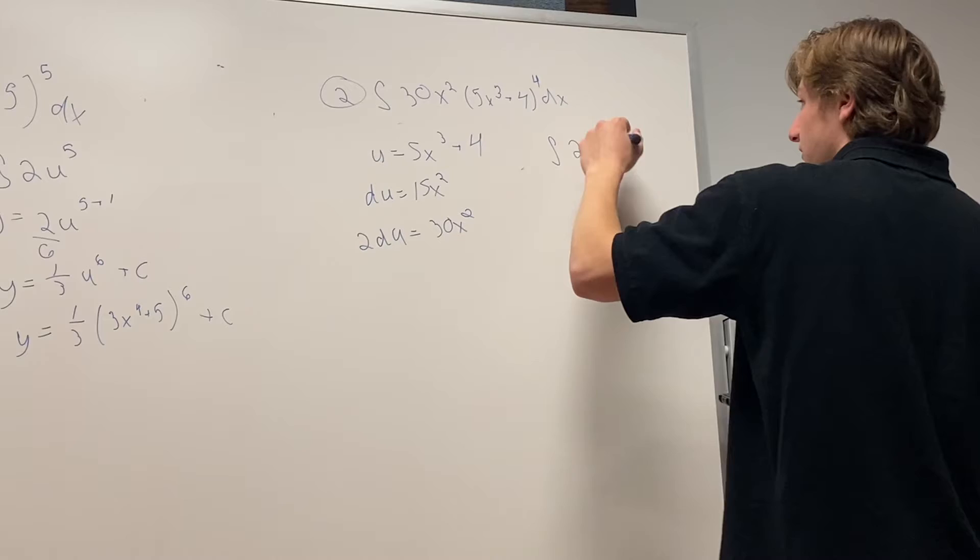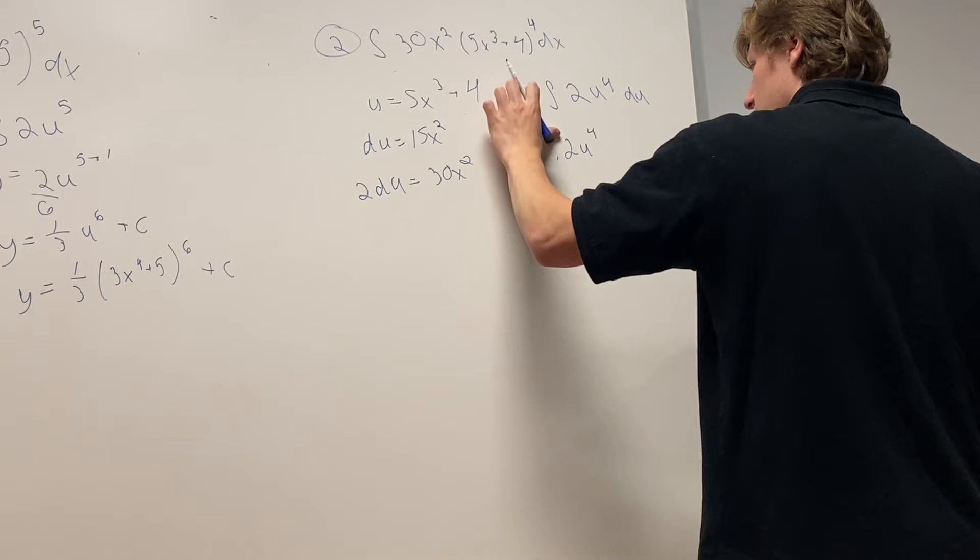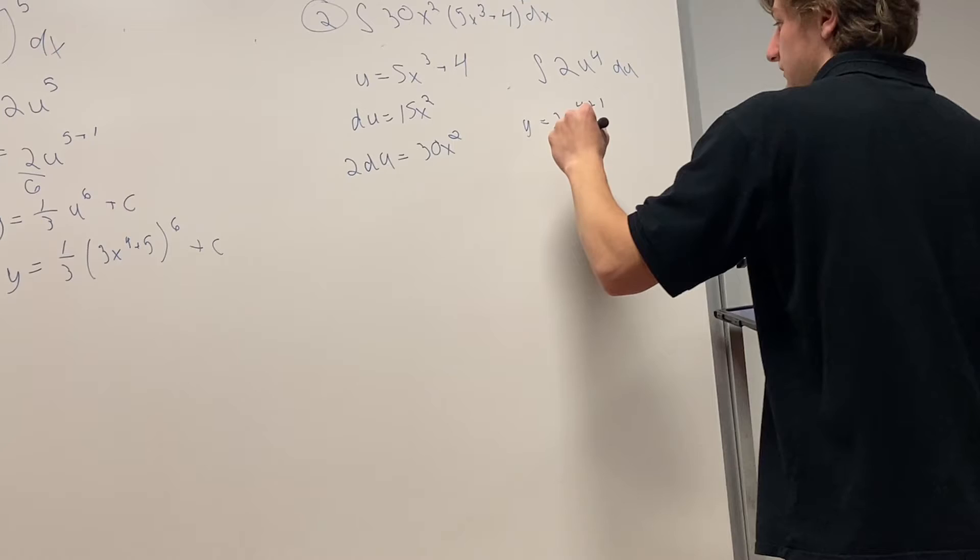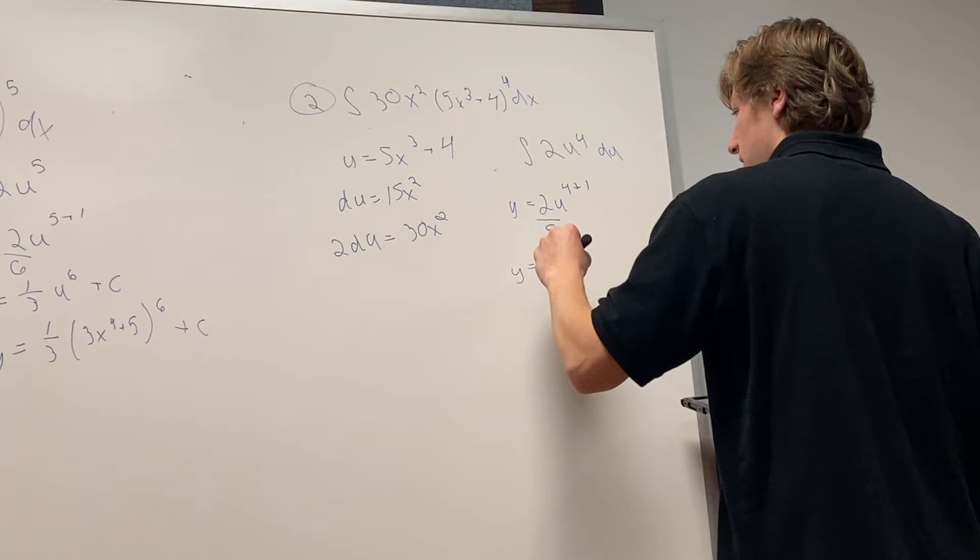Or y equals 2u to the 4th plus 1, so then divide that. So y equals 2u to the 5th, plus c.